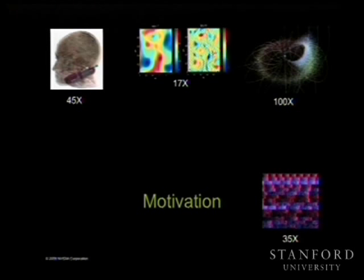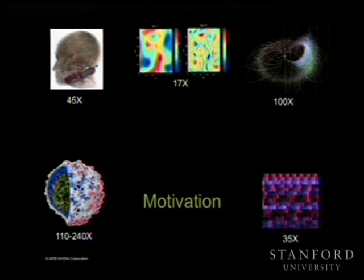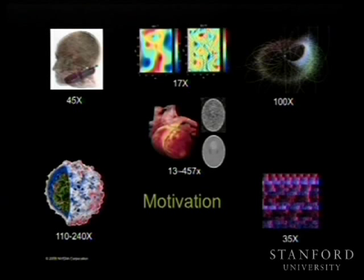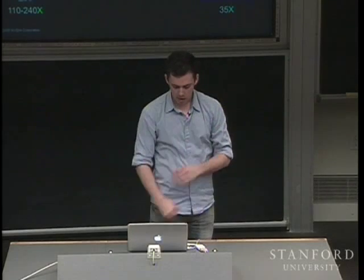We also have a bioinformatics application that saw a 35x speedup, and a molecular dynamics application that saw a speedup anywhere from 110 to 240x over the CPU — molecular dynamics maps very nicely to the GPU. And finally, results for MRI processing: you can do MRI processing on CPUs today, but the problem is you can't really do it in a clinical setting because it takes so long — it could take hours to denoise this data. But in fact if you parallelize it with CUDA, you can actually make it interactive and get a result with the patient still in the clinic while he waits.